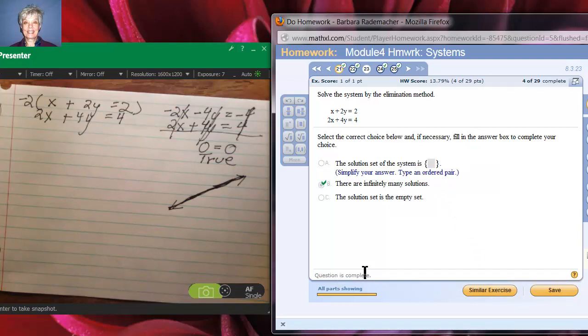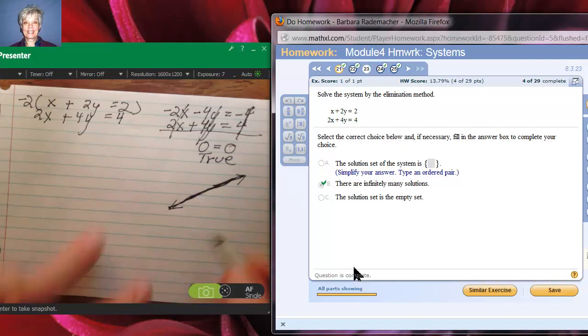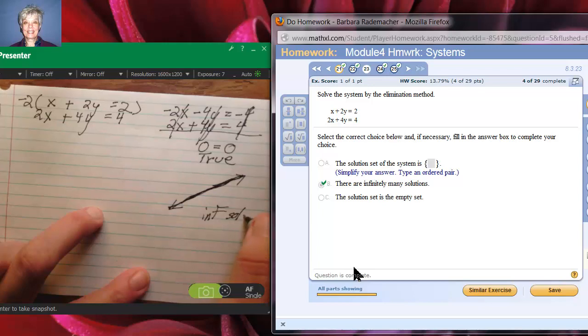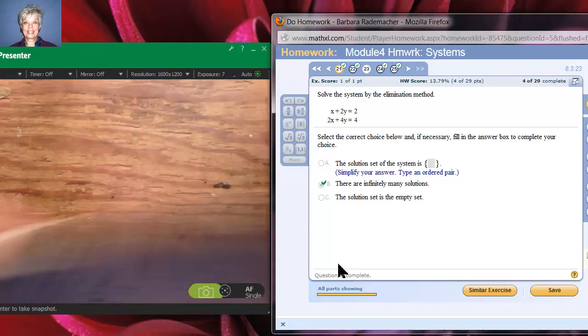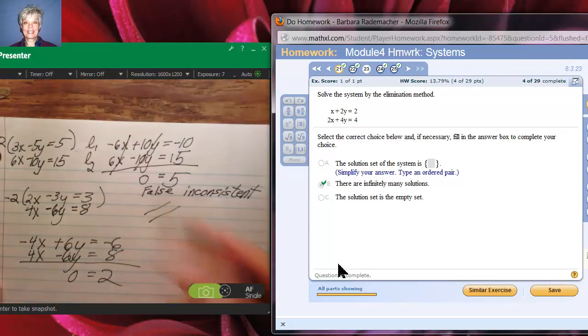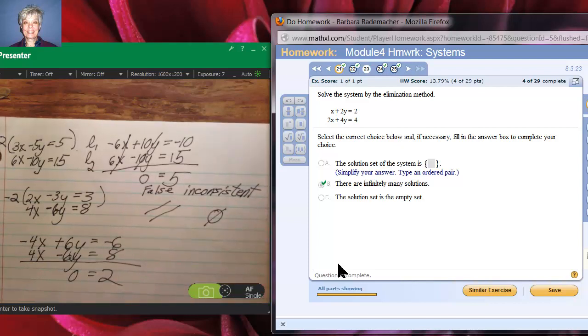So those are the kinds of answers you get with elimination when you've got the unusual systems. Zero equals zero means you've got a dependent system with an infinite number of solutions. And zero equals five, zero equals two, some false equation means you've got an inconsistent system. You've got the empty set as your answer.